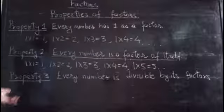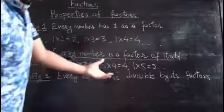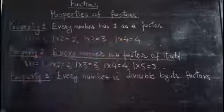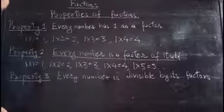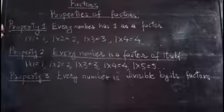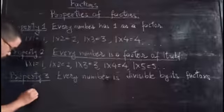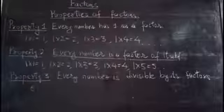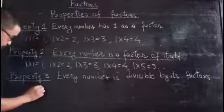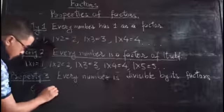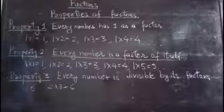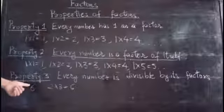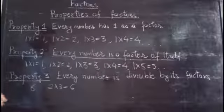Now property number three: every number is divisible by each of its factors. For example, let's find the factors of six. We know that two times three equals six. Other numbers like four and five will not divide six evenly.